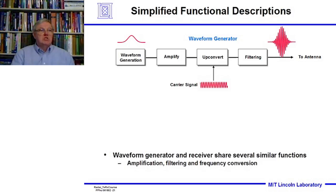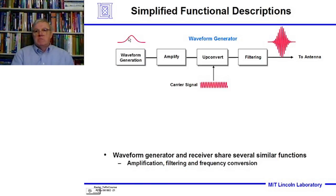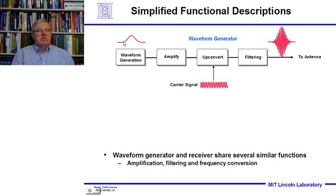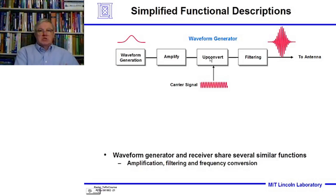We generate that frequency down at frequencies that aren't microwave, where it's easy to make a very non-lossy, exact signal with just the right characteristics of stability. We generate that at low frequency, then we amplify it, and then we up-convert it to the frequency of interest. When I say up-convert, I mean we shift the frequency — I'm going to show you how we do that in a minute.